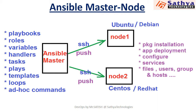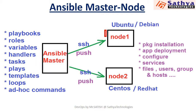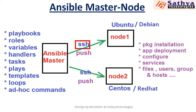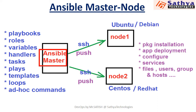Now what is the functionality of Ansible Master and how will it control multiple nodes? First, Ansible will connect with multiple nodes through SSH — SSH is a secure shell. Ansible uses a push model, so whatever configurations we develop at Ansible Master can be pushed to multiple nodes from a central location.